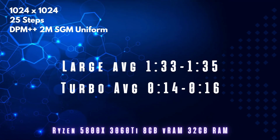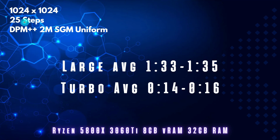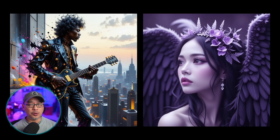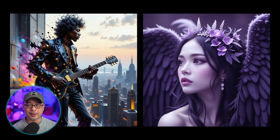In terms of speed for my setup with 8 gigabytes of VRAM at 1024 by 1024, 25 steps with DPM++ 2M, I was getting about a minute and a half for the large model. Turbo was taking me about 14 to 16 seconds. ComfyUI will run it in low VRAM mode so it's not too bad. But as I said, 30 to 40 steps is better, maybe even 50, so obviously these times will be a bit longer. As far as I know this only works with ComfyUI and Swarms, since Swarms uses ComfyUI as a back-end.